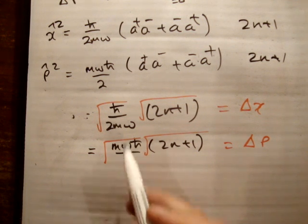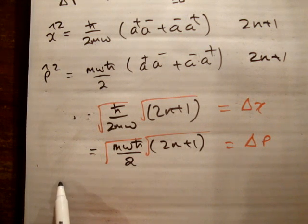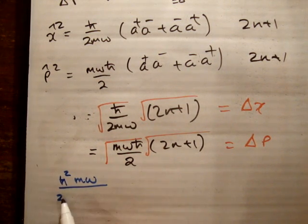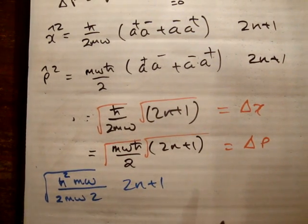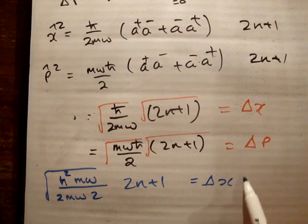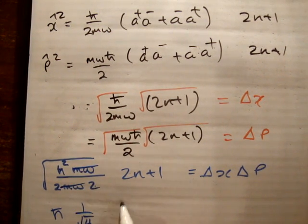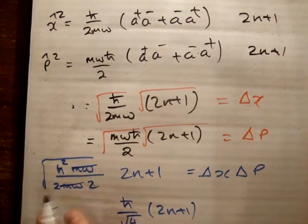So we're going to get, look at this. This, we're going to have, in the inside, we are going to have h bar squared m omega divided by 2m omega times 2. That's going to be squared, and we're going to have 2n plus 1. That's going to be equal to delta x delta p. So look, the h bar squared, pull that out, h bar. The 2 here, and that's going to become 1 over square root 4. Yeah, 1 over square root 4. The m omega cancel with the m omega. So basically what we have here is h bar over square root 4 times 2n plus 1.